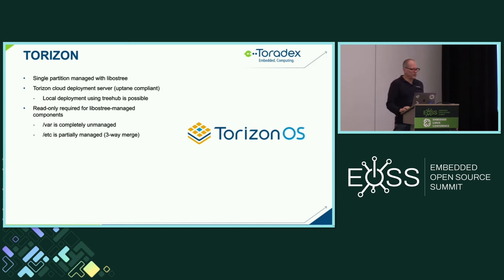Now with the delta update — same scenario as the previous slide but doing a delta update. I had to change my units to kilobytes here because Mender performed very well at 232 kilobytes. The Torizon standard without the static deltas is about 12 megabytes. The others are slightly higher. OSTree static deltas gets that size down even further to 96 kilobytes.